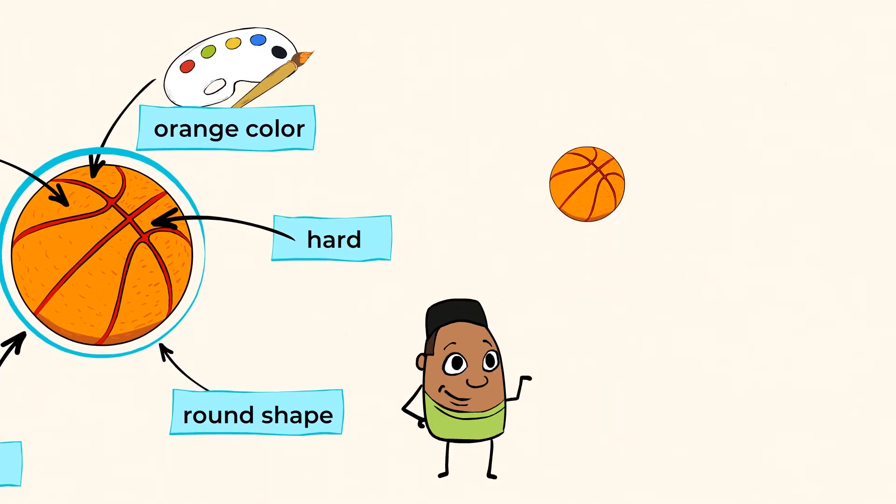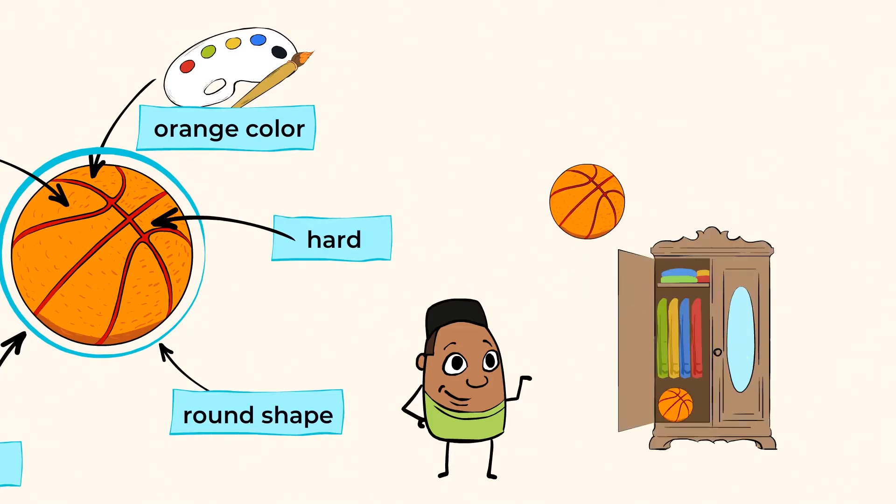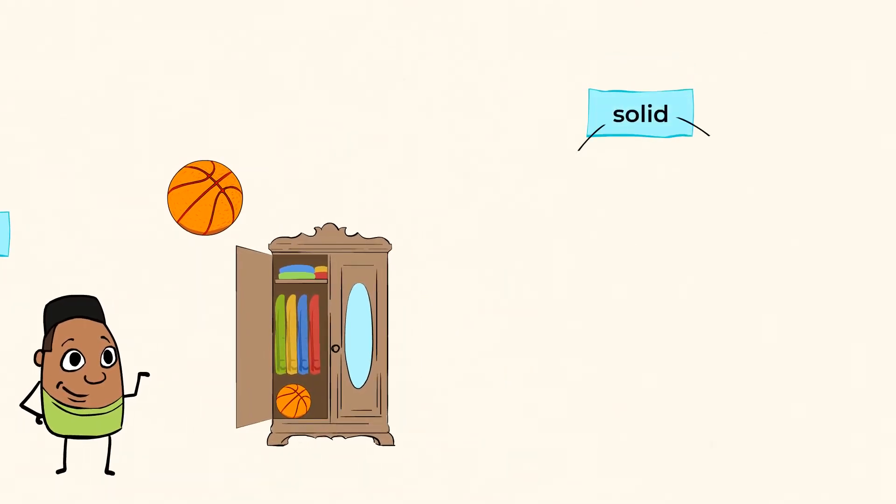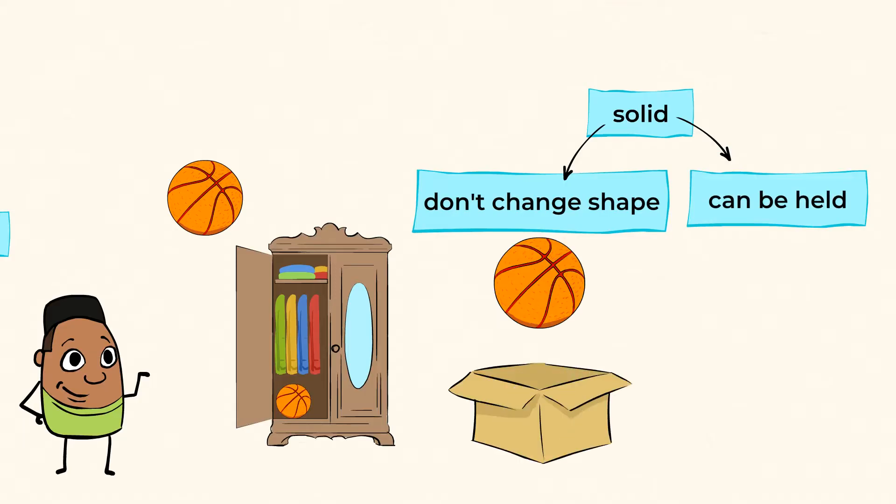But it bounces very well, right? And you can never find space for it in your closet. It does take up a lot of space. Solids don't change their shape, and they can be held. For example, if we put this basketball in a box, it would still be round. It won't become a cube just because it's in a box.